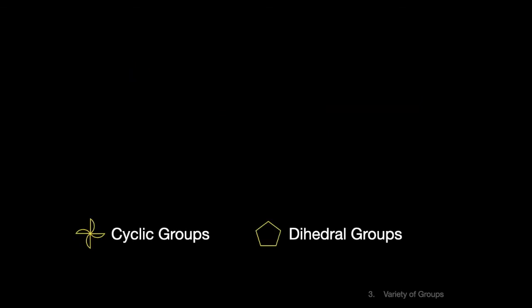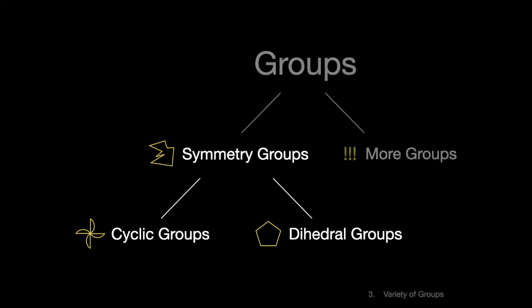These are just a few kinds of groups, and they involve collecting the symmetries of a shape to make a group. Groups formed in this way are called symmetry groups, but there are many other kinds of groups. There's nothing in the four axioms of a group that says the elements of a group have to be symmetries of a shape.